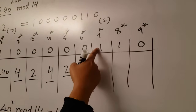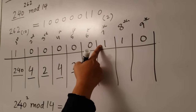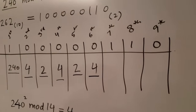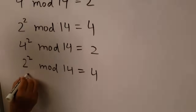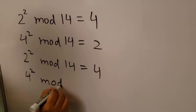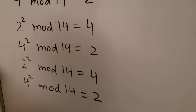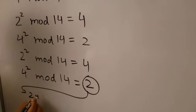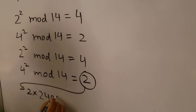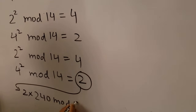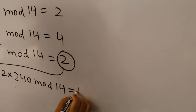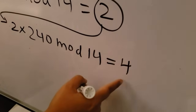Now look at the binary digit of the seventh column — it is one, which means we have to do two steps. Take four from the sixth column, square it, and mod 14; you get two. Now multiply this two by the base 240 and then mod 14; you get four. Write down four in the seventh column.